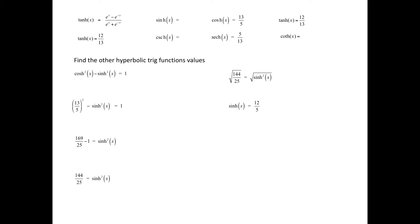The hyperbolic sine function value will also be positive, and that value is 12 fifths. The hyperbolic cosecant of x is 1 over the hyperbolic sine of x, so the hyperbolic cosecant of x is 5 twelfths. The hyperbolic sine of x is 12 fifths, and the hyperbolic cosecant of x is 5 twelfths.